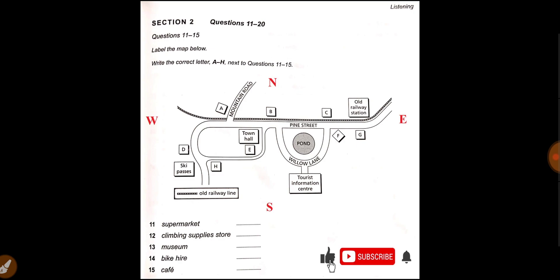You'll see the town hall. Go down the little road that you come to just before it and you'll find the bike hire shop just behind the hall. So the answer of the 14th question will be E. E part is your bike hire place. So let's move up to the next question.